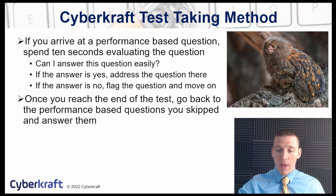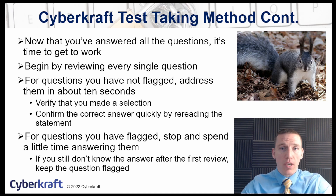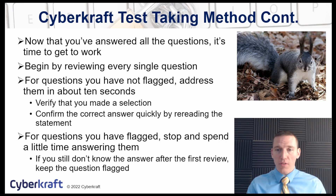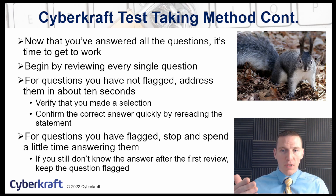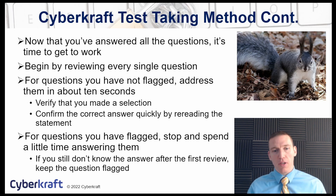Answer those performance-based questions at the end of your first pass through the test. Once you've gone through the test once, go through it again — I recommend going through the test three times. On the first pass, answer all the multiple-choice questions, flag or answer all performance-based questions, and then answer the PBQs at the end. On the second pass, verify you've made a selection for each question. For unflagged questions you were confident about, quickly skim through to make sure your selection makes sense. You may find you accidentally clicked an answer you didn't mean to select.